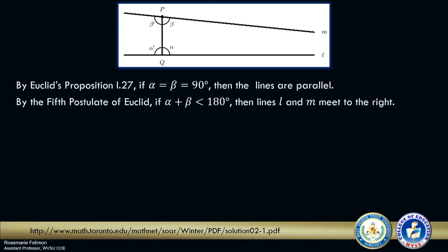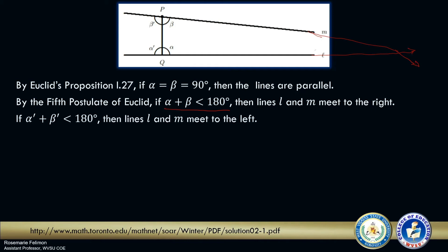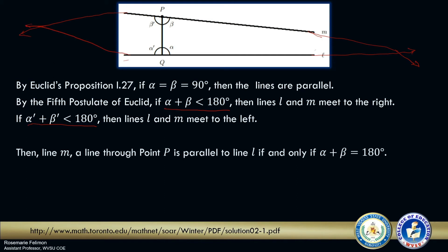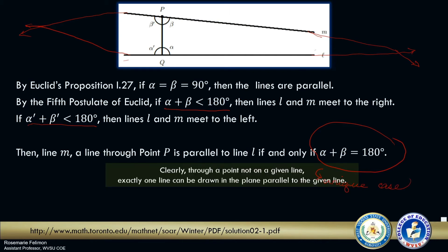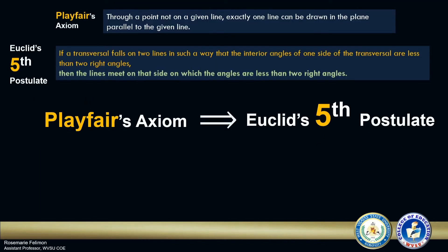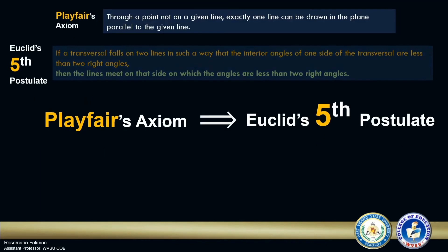Now, let us use Euclid's 5th postulate. If alpha plus beta is less than 180 degrees, then line L and line M meet to the right. On the other hand, if alpha prime plus beta prime is less than 180 degrees, then line L and line M meet to the left. Then, line M through point P is parallel to line L if and only if alpha plus beta equals 180 degrees. So this is a unique case when the lines become parallel. Clearly, we have proven Playfair's Axiom. Let us now proceed to the second part of the proof, where we use Playfair's Axiom to show Euclid's 5th postulate.